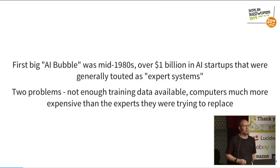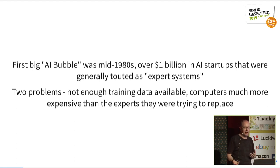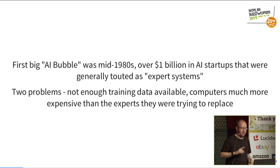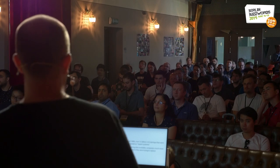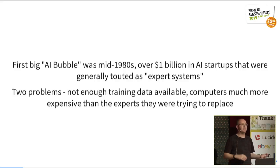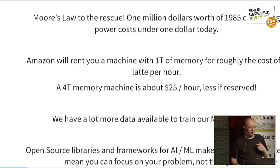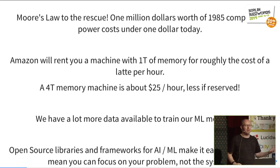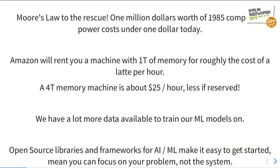But why today? The first big AI bubble was in the mid-1980s, with over a billion US dollars raised in VC funding, mostly for AI expert systems. They had two big problems: there wasn't enough training data available, and in the 1980s it was cheaper to employ an expert than it was to buy the computers. We're back again today. Moore's law to the rescue — one million US dollars worth of computing power in 1985 is less than a dollar today. Amazon will rent you a machine with a whole terabyte of memory for about the cost of a latte an hour.